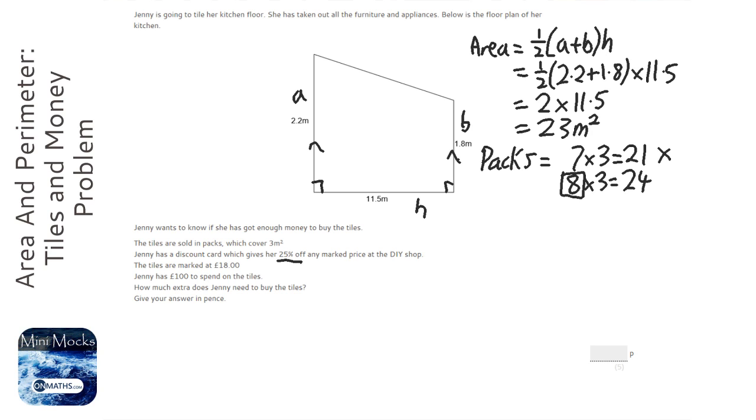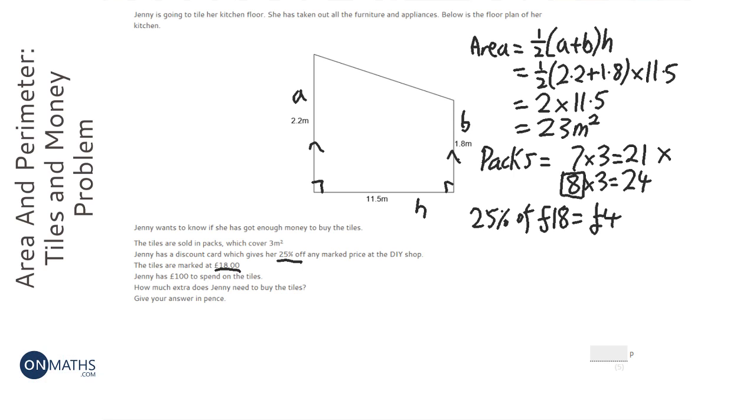It's 25% off the marked price and they're marked at £18. So I want to work out 25% of £18. Now, to find a quarter of something, which is 25%, you halve it, then halve it again. So half that is 9, and a quarter of it is therefore half of 9, which is 4.5. So that's going to be £4.50.